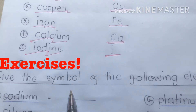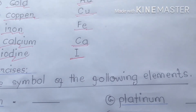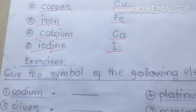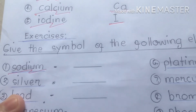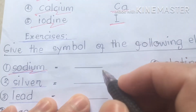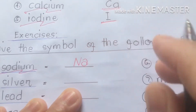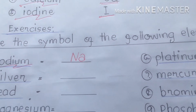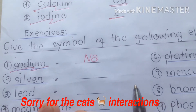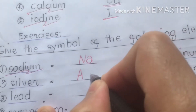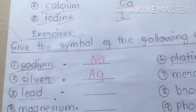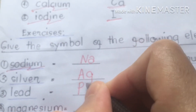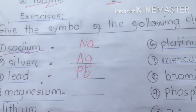Direction: give the symbol of the following elements. Number one is sodium. The symbol for sodium is Na. Number two is silver — uppercase A, lowercase g, written as Ag. Number three is lead — uppercase P, lowercase b, written as Pb. That's the symbol for lead.